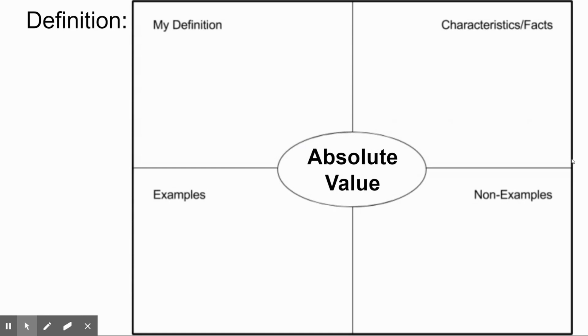Our Freyer model, and if you don't have guided notes, I would suggest writing this into your spiral, pause it if you need. The word that we're going to define is absolute value. So as per usual, we're going to start off with some examples.